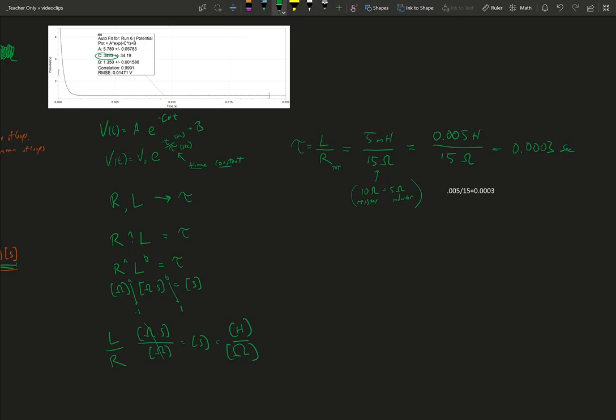Now the C parameter in Logger Pro is equal to 1 over the time constant, which is the same as 1 over L over R, which is the same as R over L. So I calculated a time constant of 0.0003 seconds, or 0.3 milliseconds.